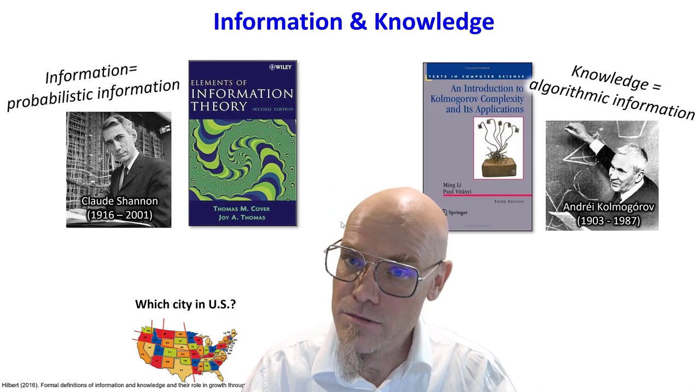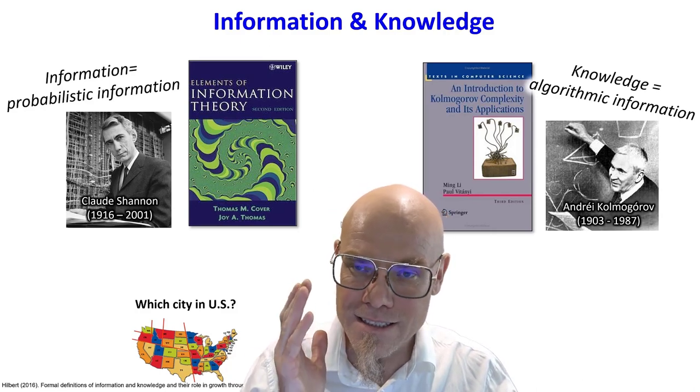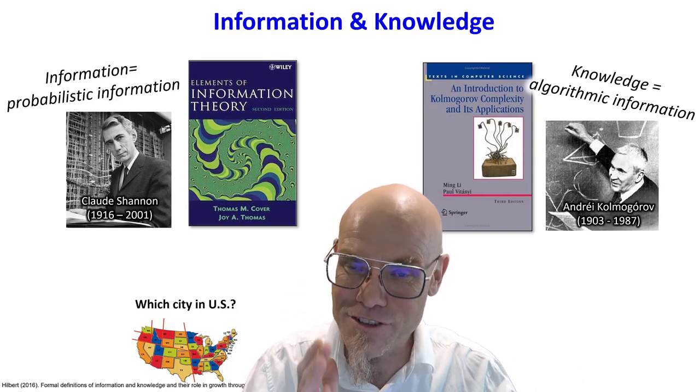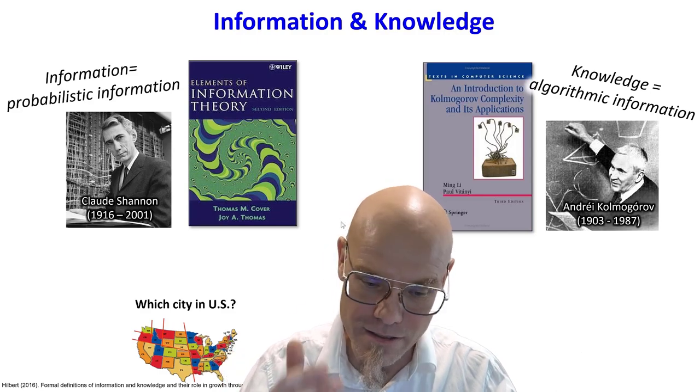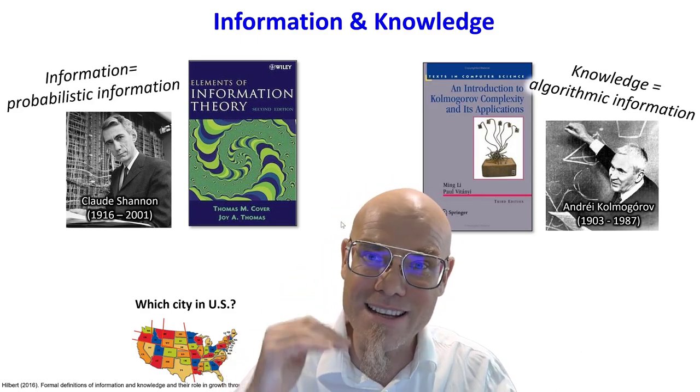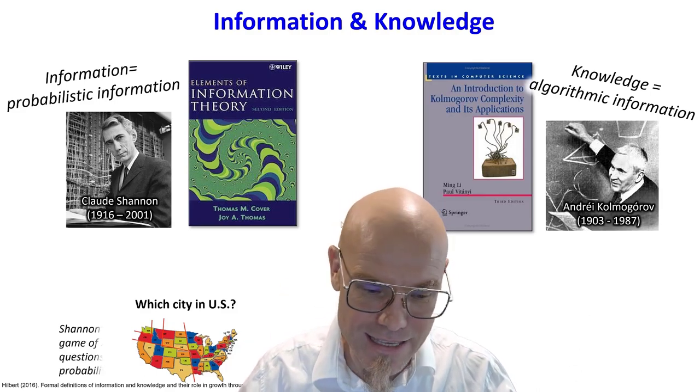I have two ways of communicating to you or computing to you what that city is. I can reveal it to you by reducing uncertainty. And if you play that game well, you always reduce uncertainty by half. That's the most efficient way. That means you communicate one bit. So you can say, is it on this side or that side of the Mississippi? Is it north?